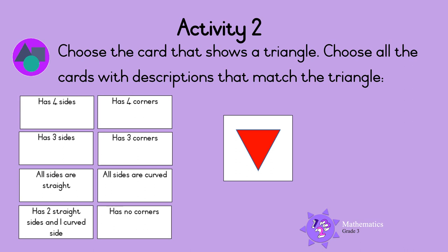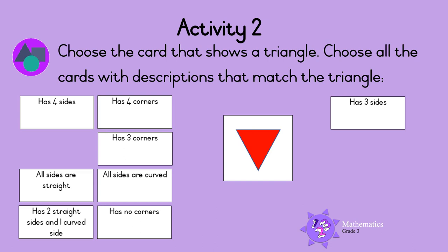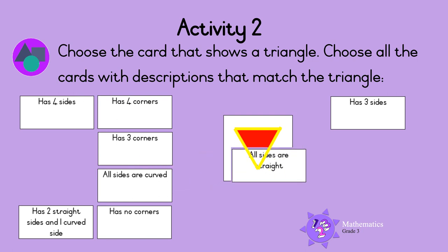Are you ready? Count the number of sides: 1, 2, 3. So the triangle has 3 sides. Are the sides straight or curved? Can you see that all the sides are straight? So all the sides of a triangle are straight.